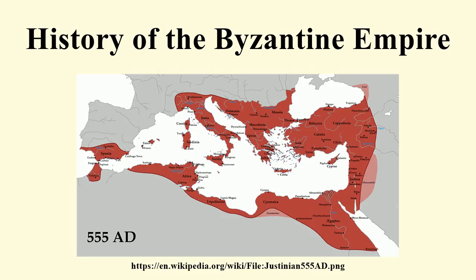Leo I succeeded Martian as emperor, and after the fall of Attila, the true chief in Constantinople was the Alan general Aspar. Leo I managed to free himself from the influence of the non-Orthodox chief by supporting the rise of the Isaurians, a semi-barbarian tribe living in southern Anatolia. Aspar and his son Ardeboa were murdered in a riot in 471, and henceforth Constantinople restored Orthodox leadership for centuries.